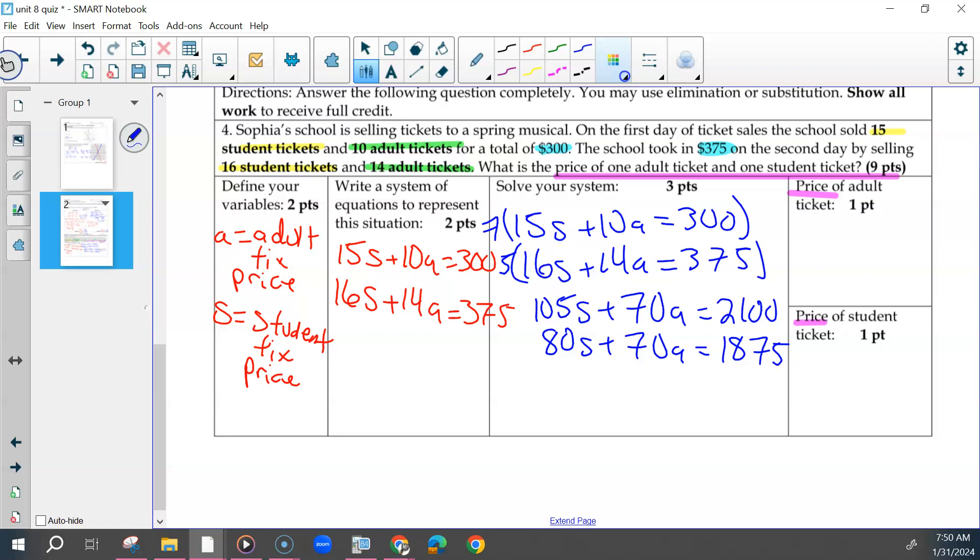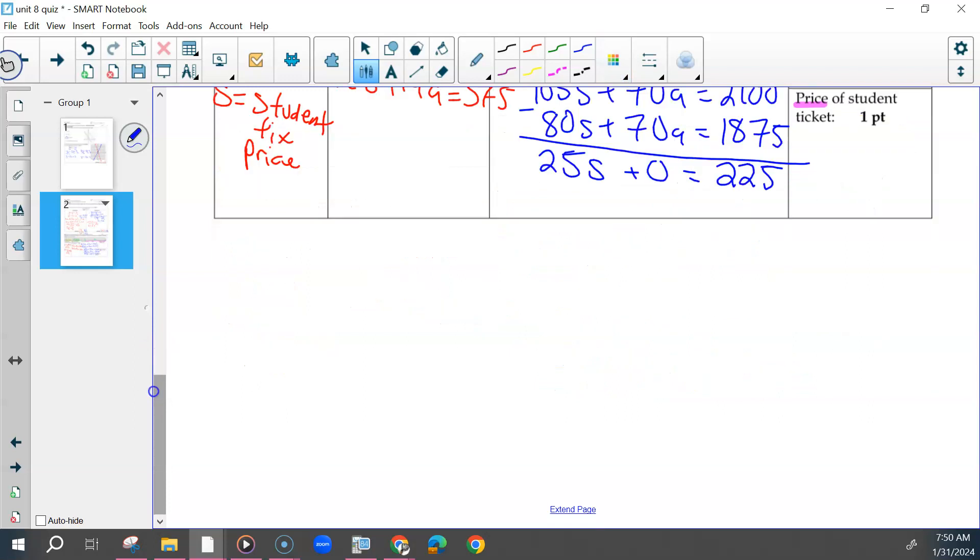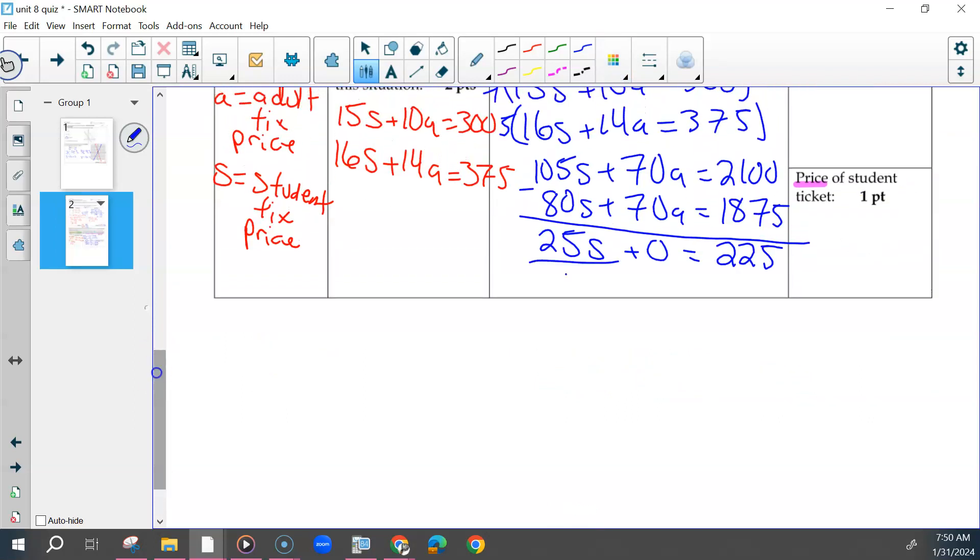To eliminate our A's here, we could subtract. We get 25S equals 225. And then divide both sides by 25 to get 9. So the price of a student ticket was $9. Make sure you have your unit. Some of you just put S equals 9, but it should have been $9.